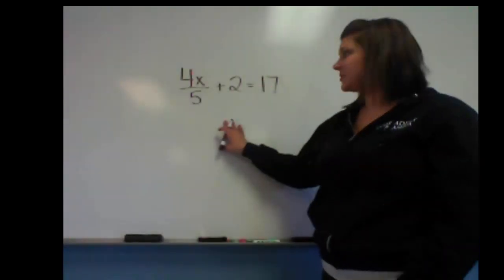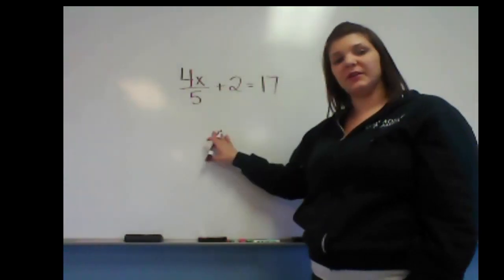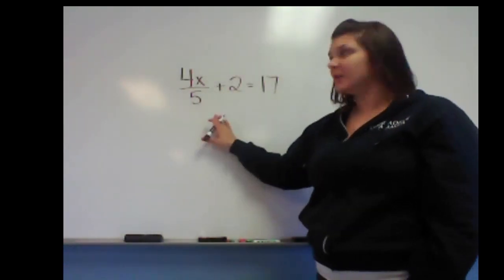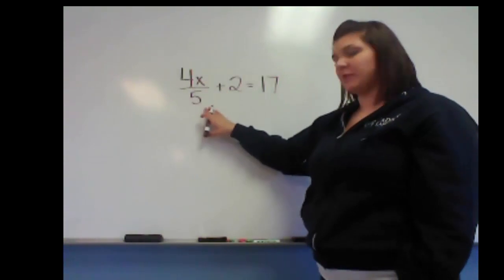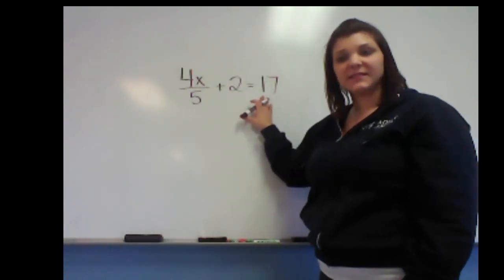Okay, so I've had a request for equations that look something like this, specifically when our variable is in the numerator of a fraction with a denominator. So I'm going to look at this equation, 4x over 5 plus 2 equals 17. If I want to solve an equation for x, I want to get x by itself.